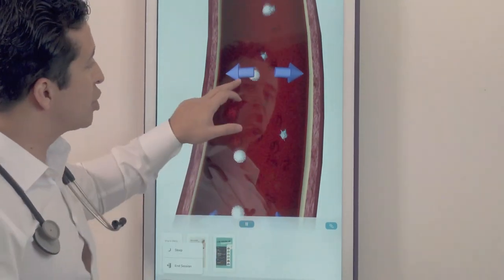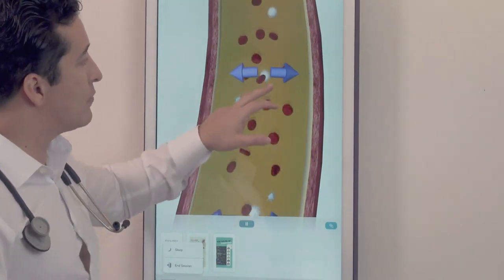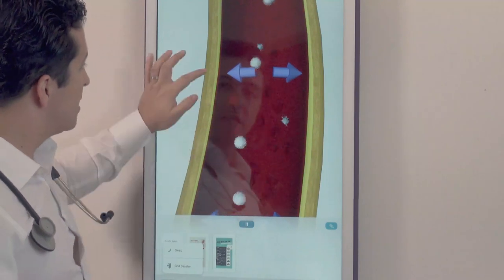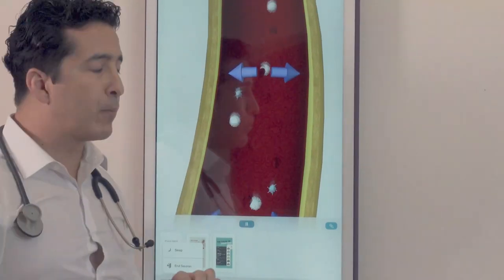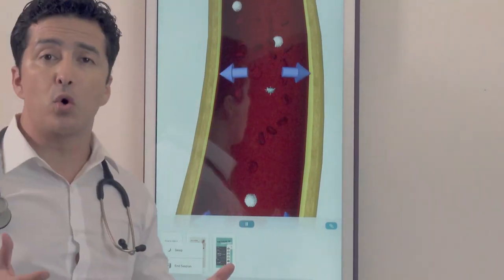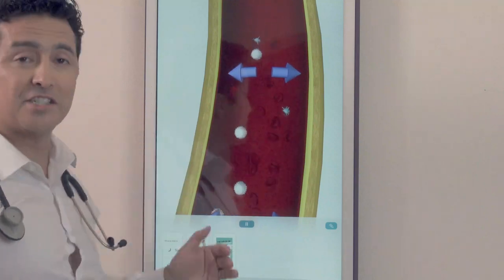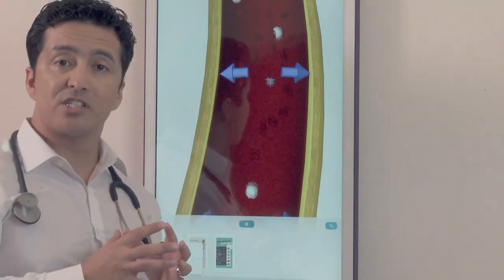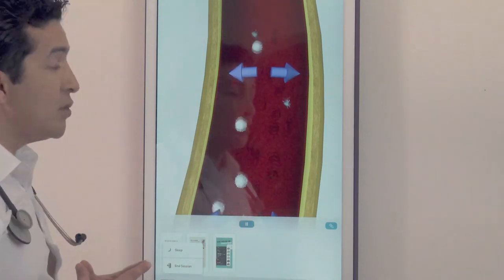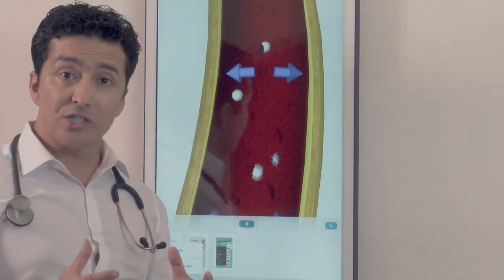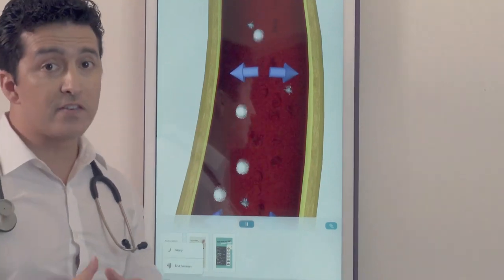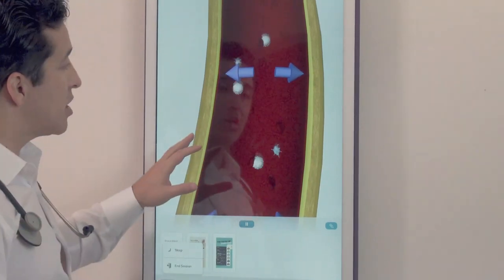So too much pressure in your arterial wall will create damage in your endothelial lining. This endothelial lining here is very important because it is actually like an organ. It secretes hormones such as nitric oxide, which keeps your blood vessels dilated. If you do not have enough nitric oxide, and that typically happens from inactivity.